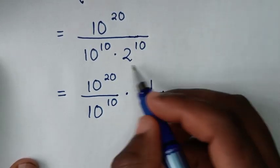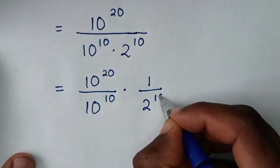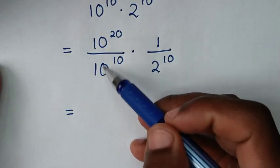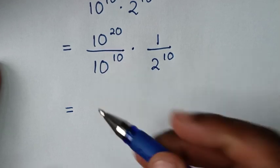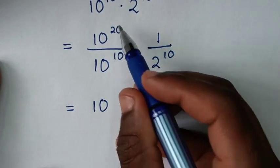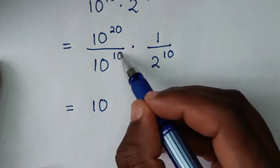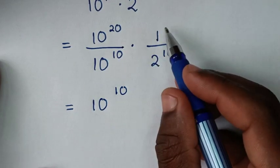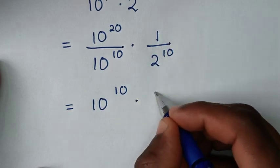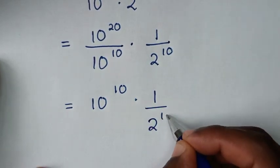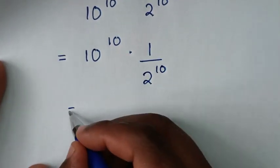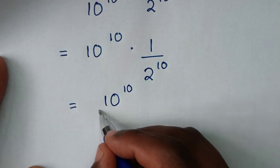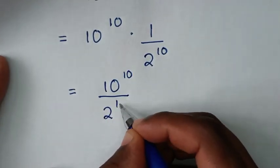So it will be 1 over this exponent of 2 power of 10. Then it will be equal to: from here, division of exponents with the same base of 10 gives the same base of 10, and we take this power minus this power — 20 minus 10 is 10 — times 1 over 2 power of 10. So 10 power of 10 times 1 is 10 power of 10, then over this exponent of 2 power of 10.